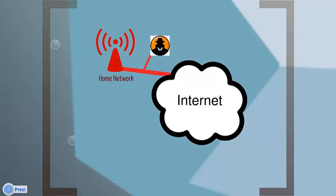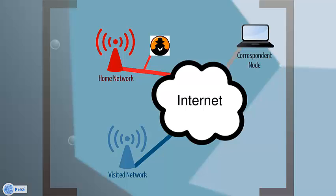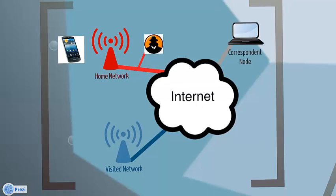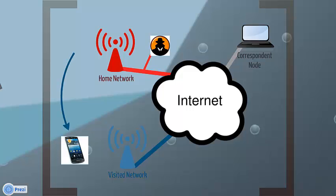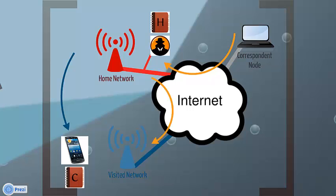To help us understand how mobile IP actually works, we will take this example. This is the home network that has a home agent connected to it. Another network will act as a foreign network, and the third network will contain the corresponding node that will try to send messages to the mobile node initially connected with the home network. The corresponding node sends a message to the mobile node using the home address it already knows. The message is intercepted by the home agent, which looks up the new address of the mobile node — the care-of address. The home agent then encapsulates the message and sends it to the mobile node's new care-of address, tunneling it to the mobile node in its new location in the foreign network.